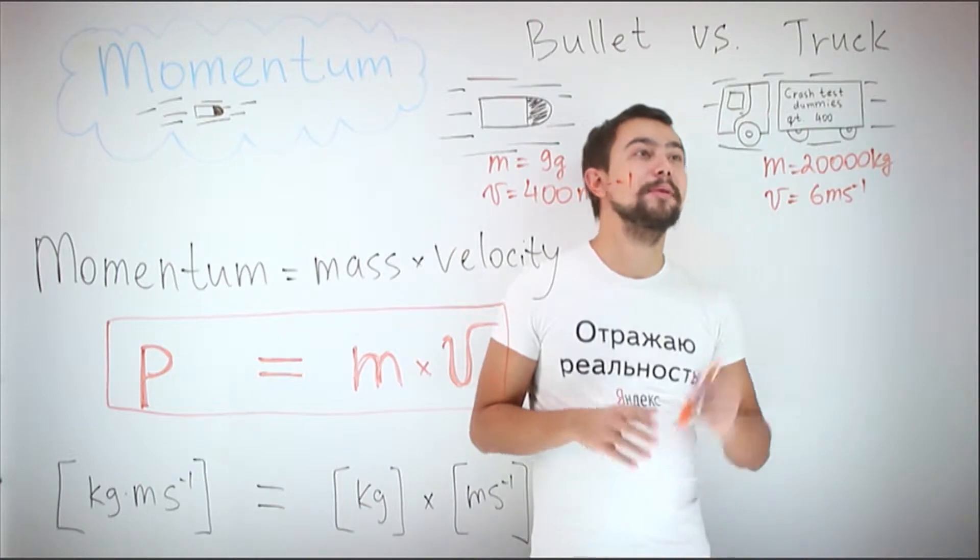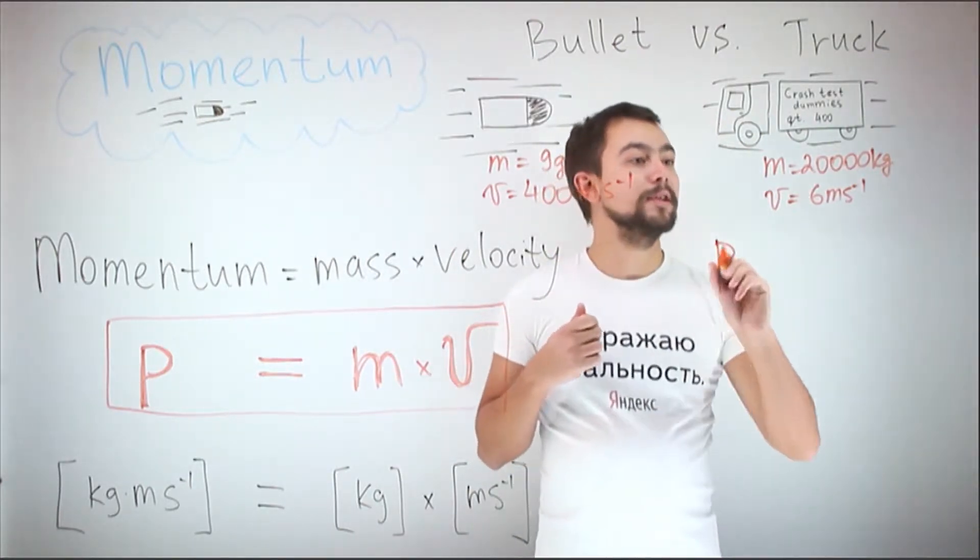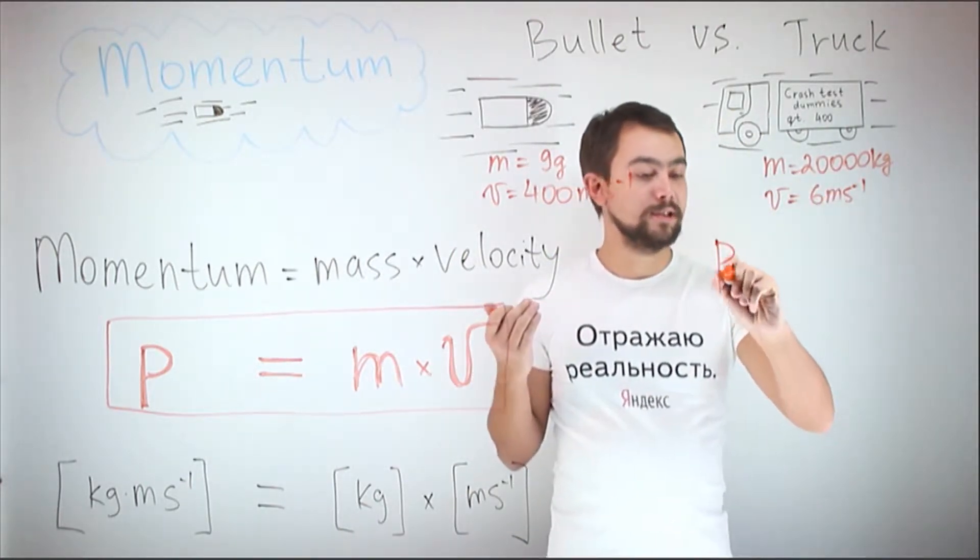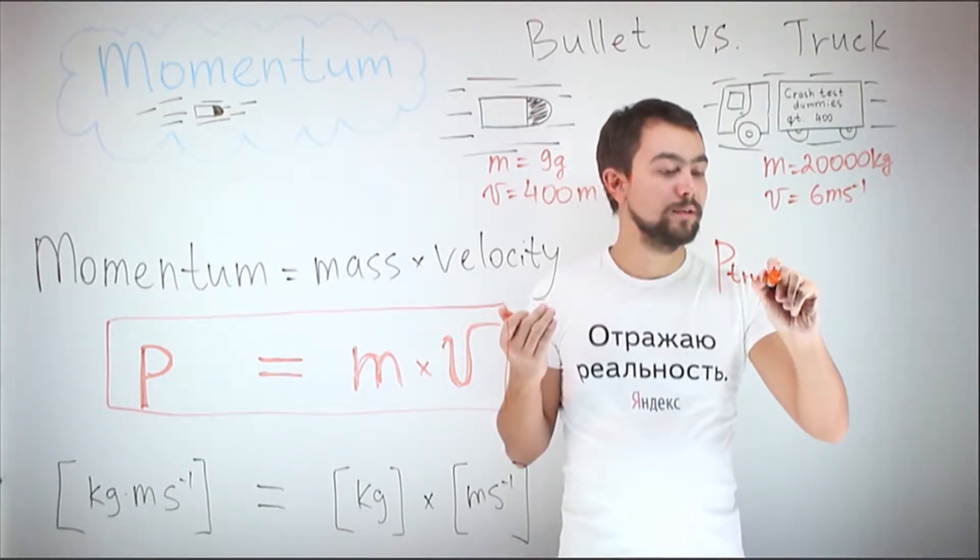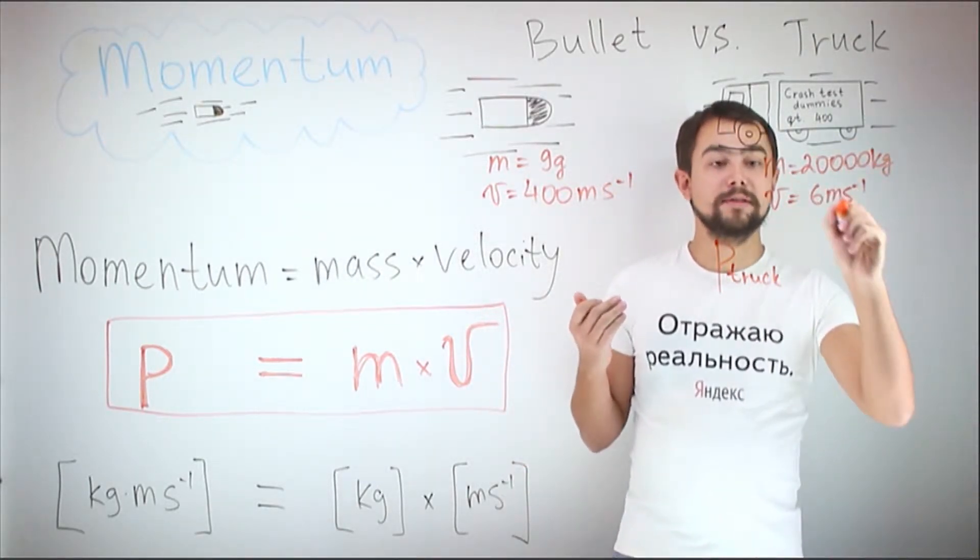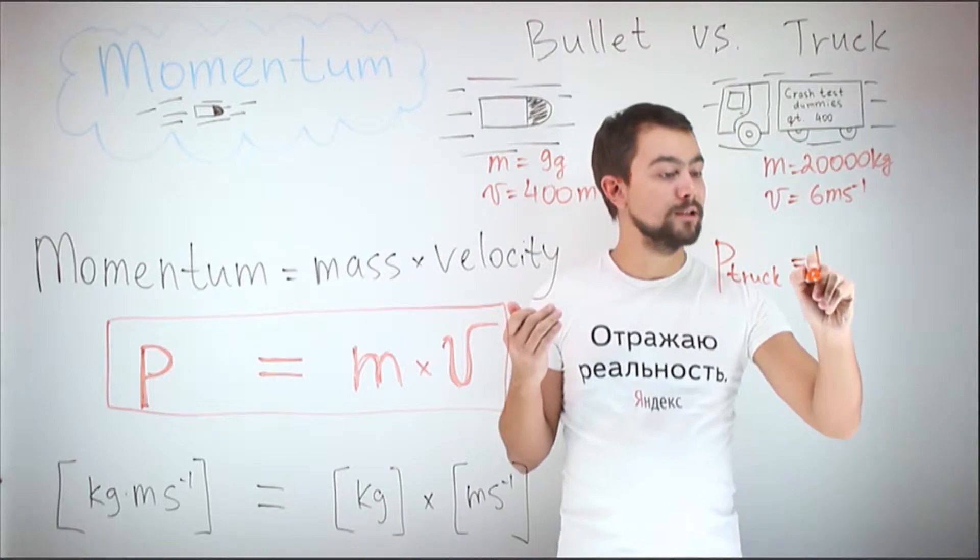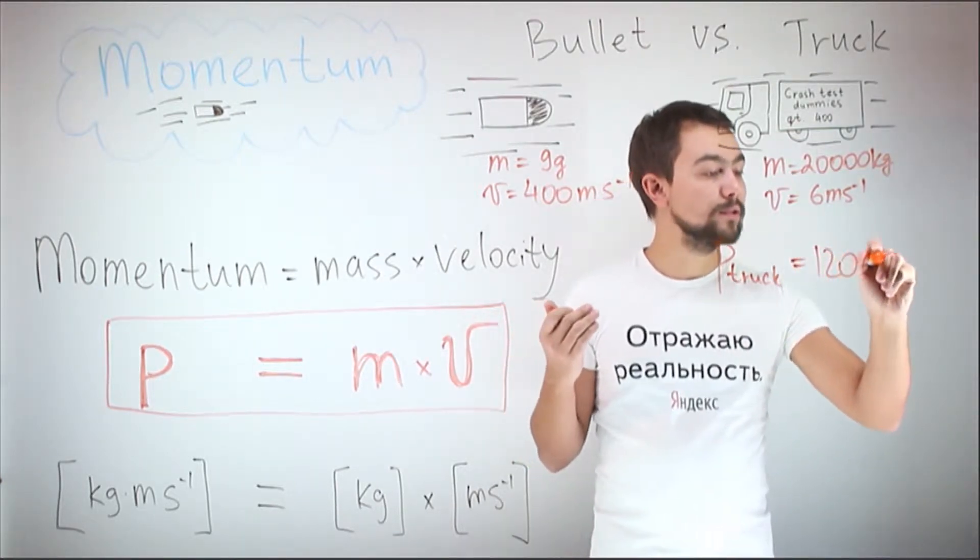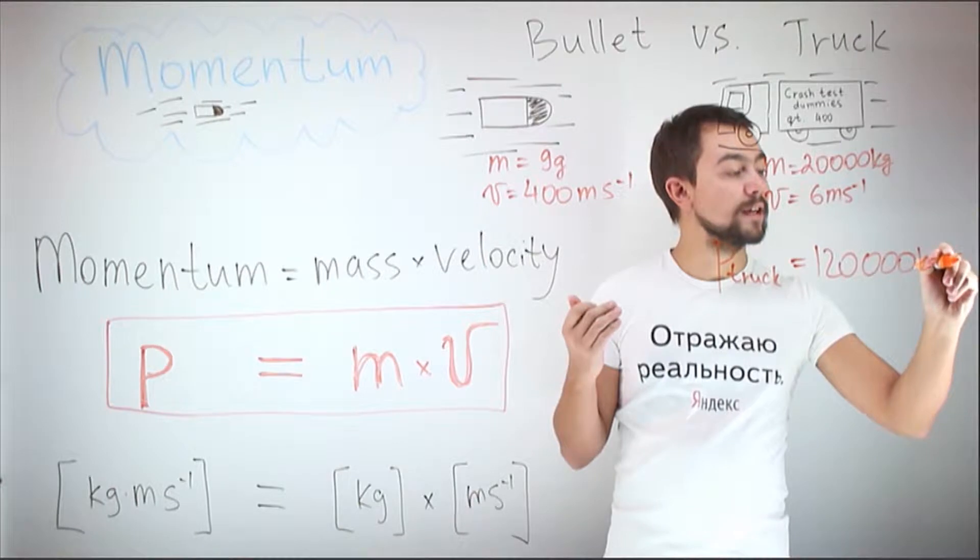Let's find the momentum of this truck. Momentum is equal to mass times velocity, so the momentum of the truck, mass 20,000 times 6 is 120,000 kilogram meters per second.